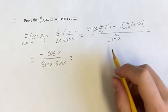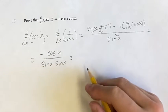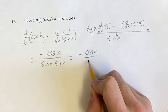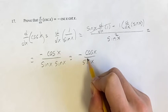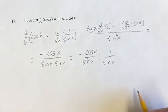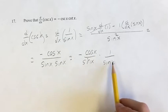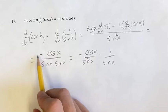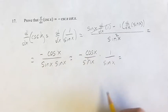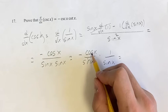So this is equal to negative cosine x over sine x times 1 over sine x, separating the denominator. If you were to re-multiply these together, we have negative cosine x times 1 is negative cosine x. Sine x times sine x is sine squared x. The reason we separated these is because we have negative cosine x over sine x.